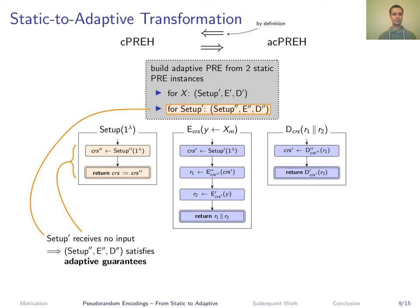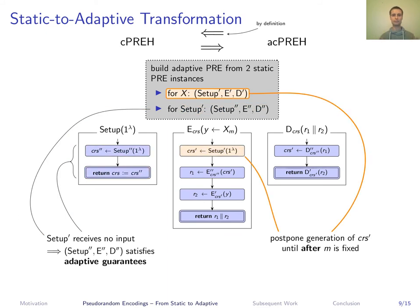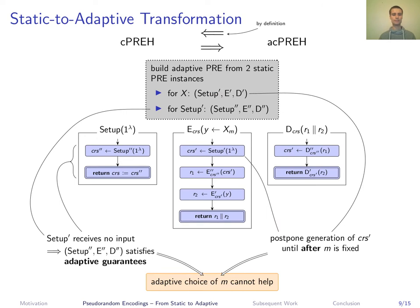Encoding works by sampling a fresh CRS using the first scheme for encoding the distribution X with static guarantees and encoding that sample with this CRS. Additionally, this fresh CRS will be encoded using the CRS of the adaptive scheme. This lets us postpone the generation of the vulnerable CRS — for this CRS it does make a difference when M is chosen, but we can postpone it until after M is fixed, namely at the time of encoding. So an adaptive choice of M will not help anymore, meaning our adaptive notion and the static notion are equivalent.